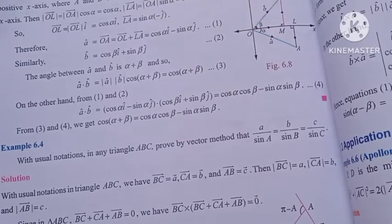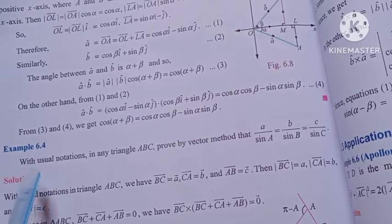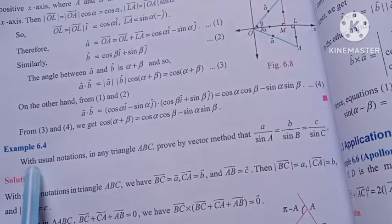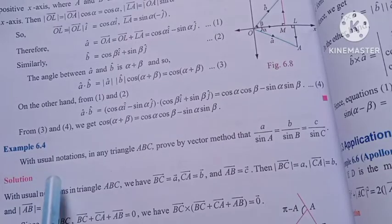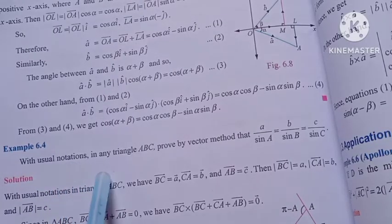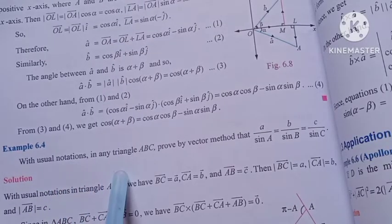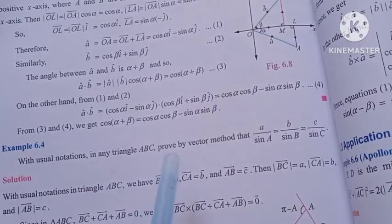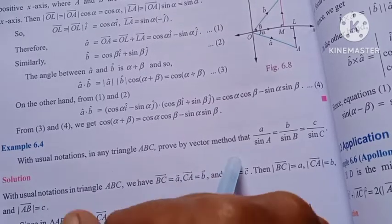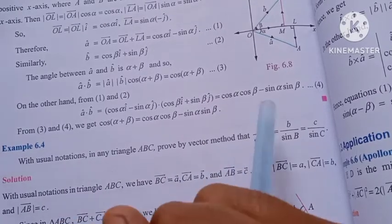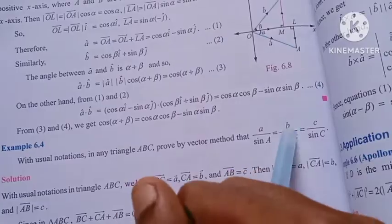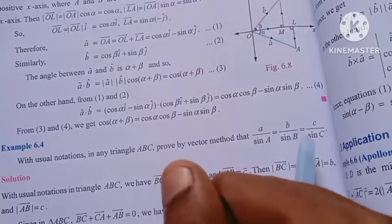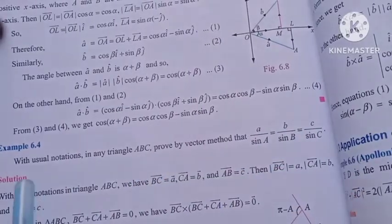Hi, Stran Syambino. 12th, Monk Chapter 6, Example 6.4. What is the question? With the usual notations in any triangle A, B, C, prove by vector method that a by sin A is equal to b by sin B is equal to c by sin C.